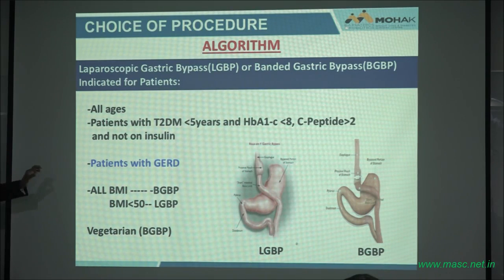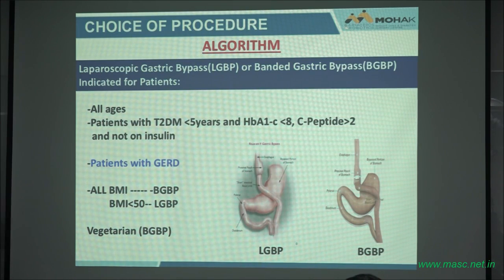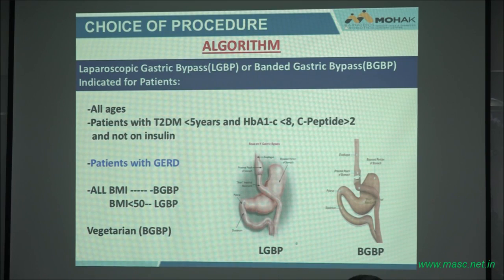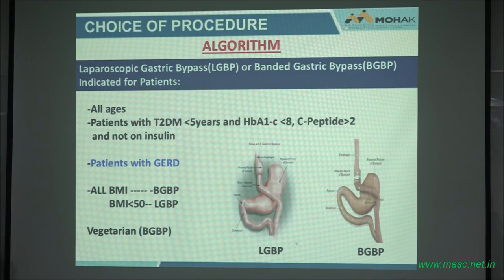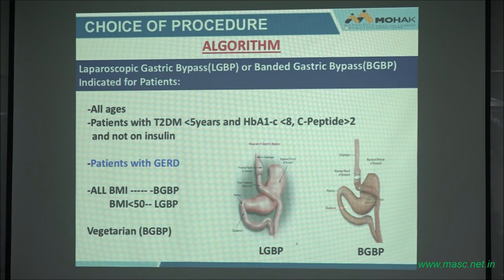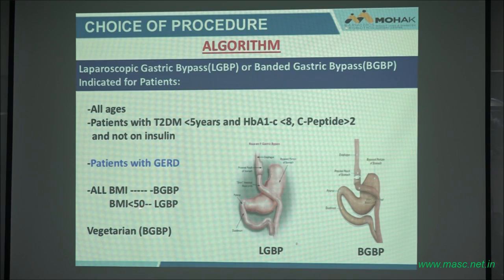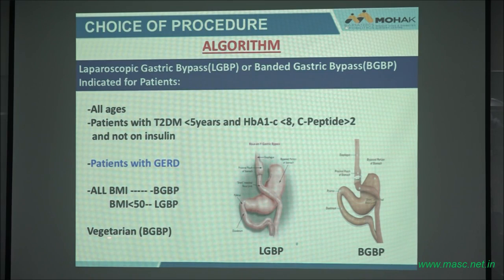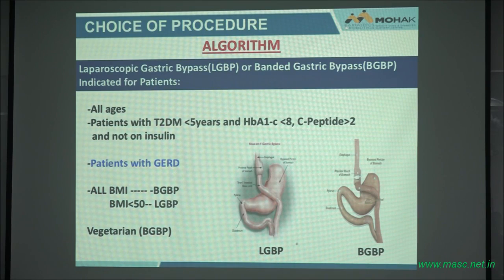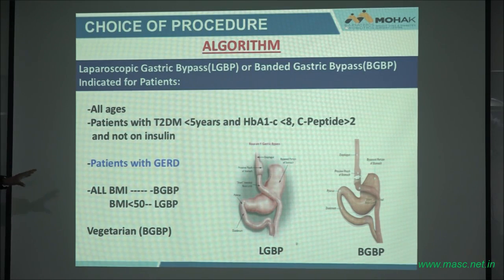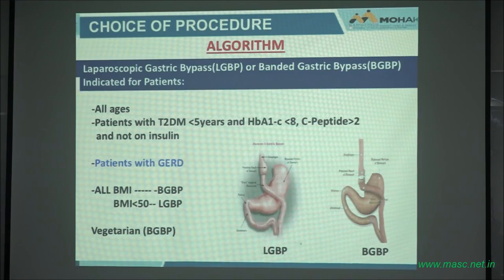Patients with GERD are a good indication for gastric bypass — it's better than the Nissen fundoplication. With the Nissen, as you heard, they have dysphagia, bloating problems, and gas-bloat syndrome. The gastric bypass diverts the GI tract, and patients have 80 to 90% resolution of reflux symptoms. For patients with BMI greater than 50, banded gastric bypass. For BMI less than 50, you can do the regular bypass. The regular gastric bypass is very good for vegetarians. We don't see any protein malnutrition in vegetarians who have a gastric bypass.